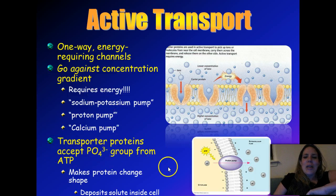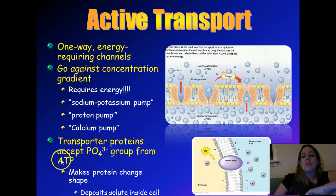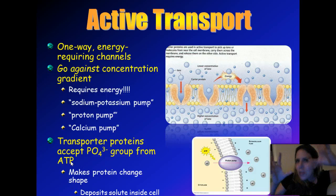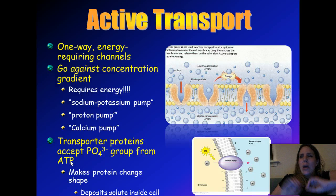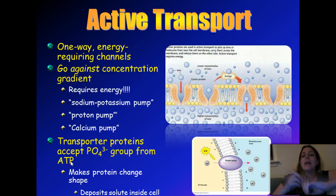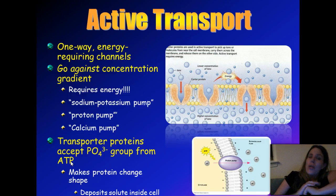Basically every time ATP is broken, you break the bonds. ATP is adenosine triphosphate — you have three phosphate molecules. When you break the bonds and take one phosphate off, you get ADP (adenosine diphosphate) plus another phosphate. That breakage of bonds releases energy — that's what fuels active transport.